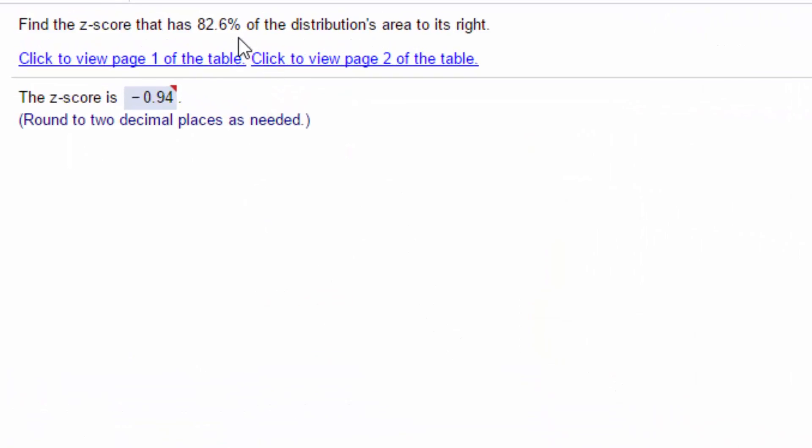On the second problem, you need to read it again. It says find the z-score that has 82.6% of the distribution, which is 0.826, to the right. So we want a right tail. You answered 9.03, which is to the right, but that's nine standard deviations, which is way way way out there.